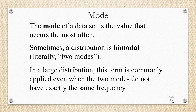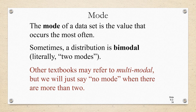In a large distribution, this term is commonly applied even when the two modes aren't exactly the same frequency. If you have thousands and thousands of data values, and you have two data values that are pretty close to the same frequency — maybe each of them occurs about a hundred times — they might still call it bimodal. Just a little special note: other textbooks may refer to multimodal, which would mean three modes or four modes, but we will just say that there's no mode when there are more than two. I mention this because the statistics class at my school has a different textbook, and in that class they do talk about multimodal.